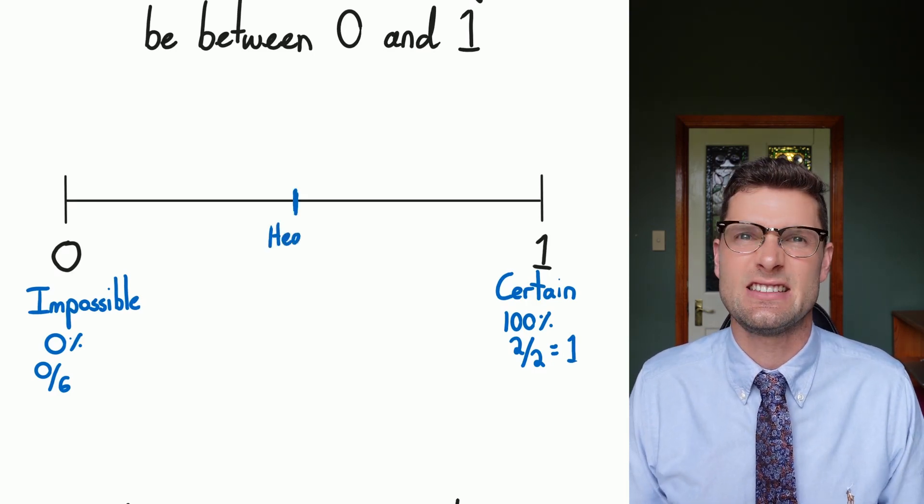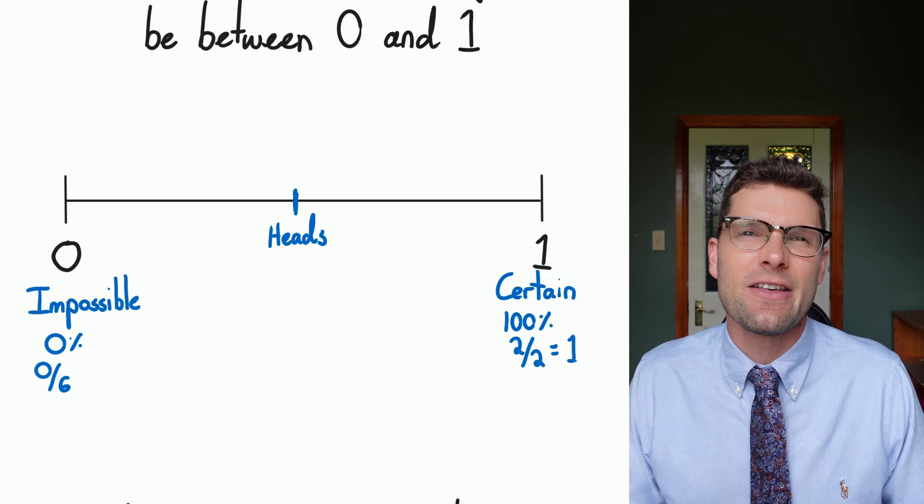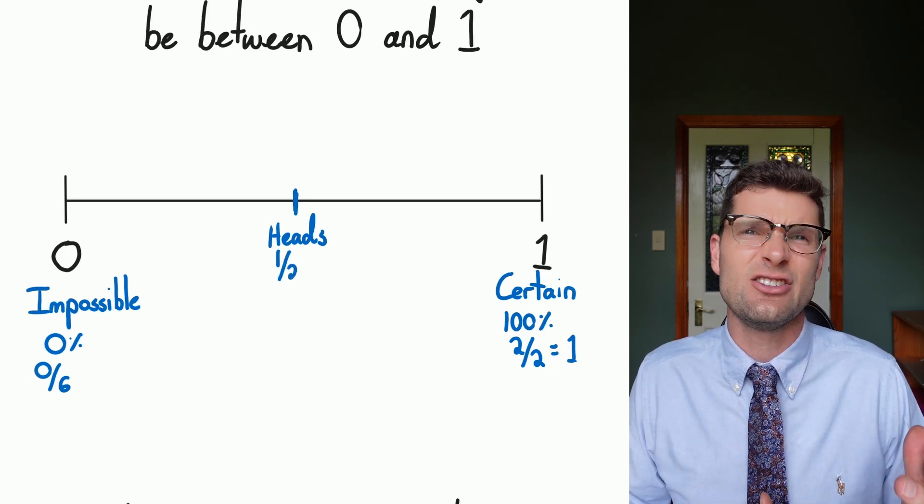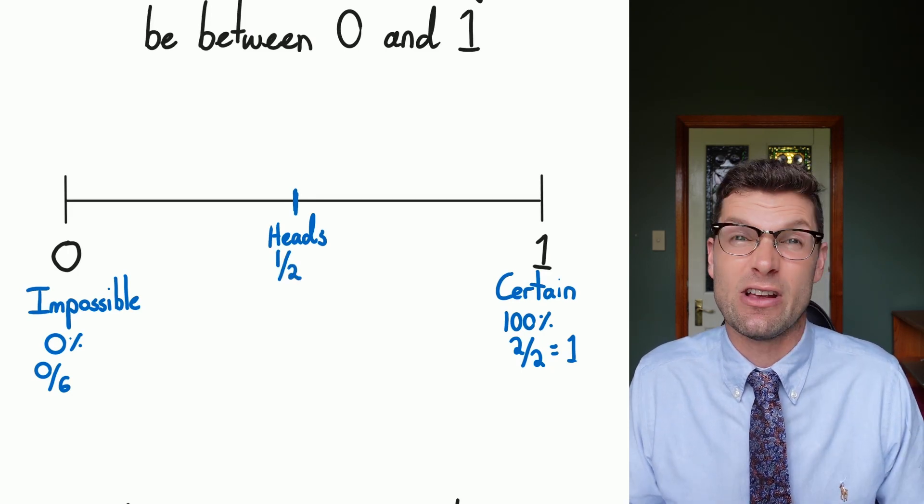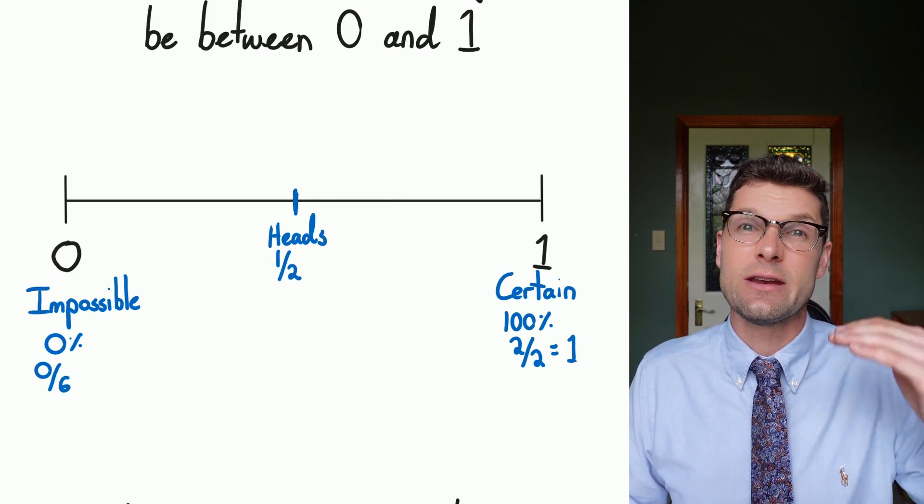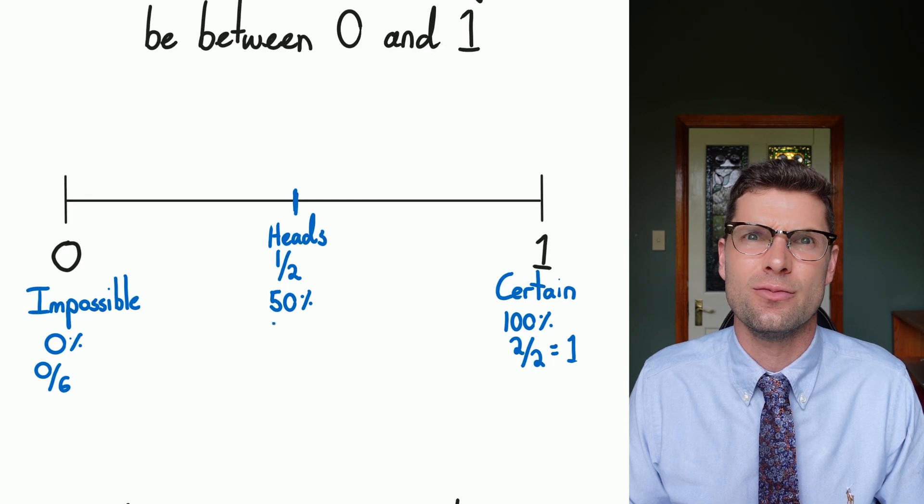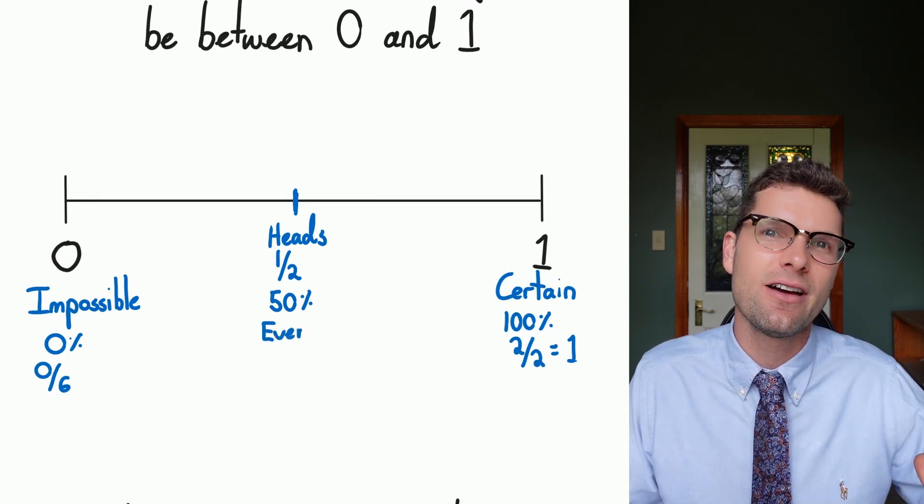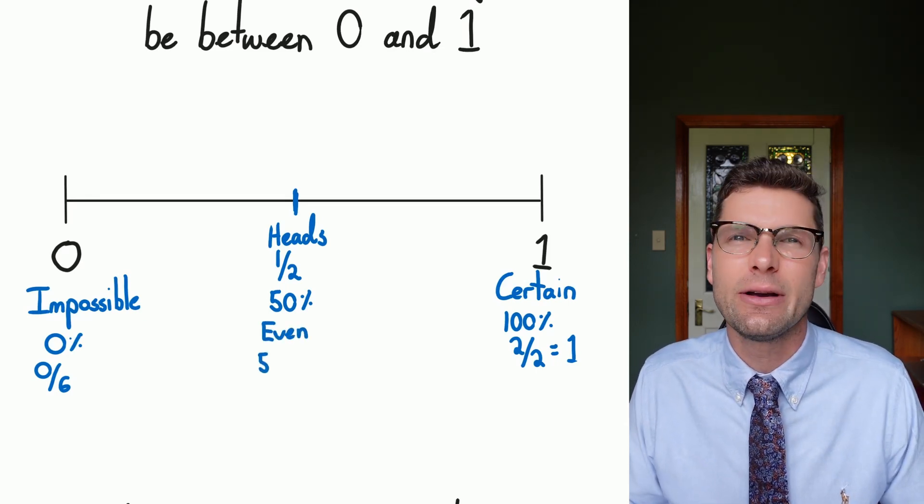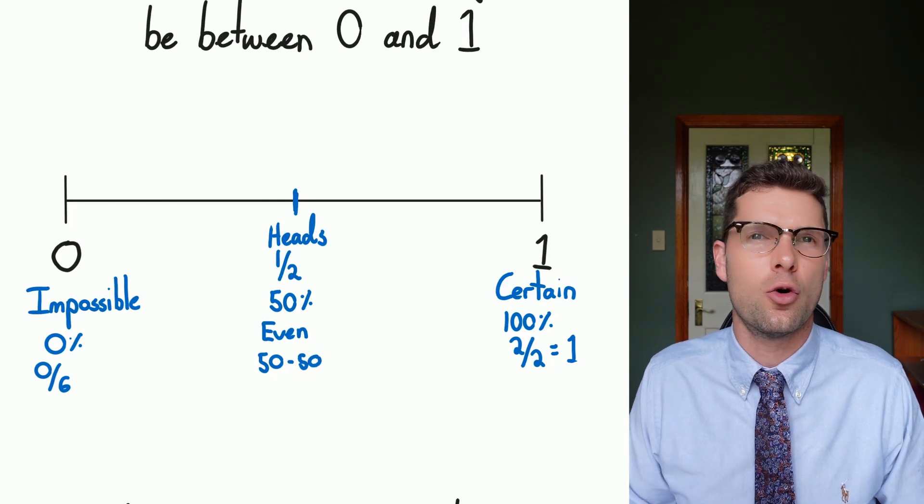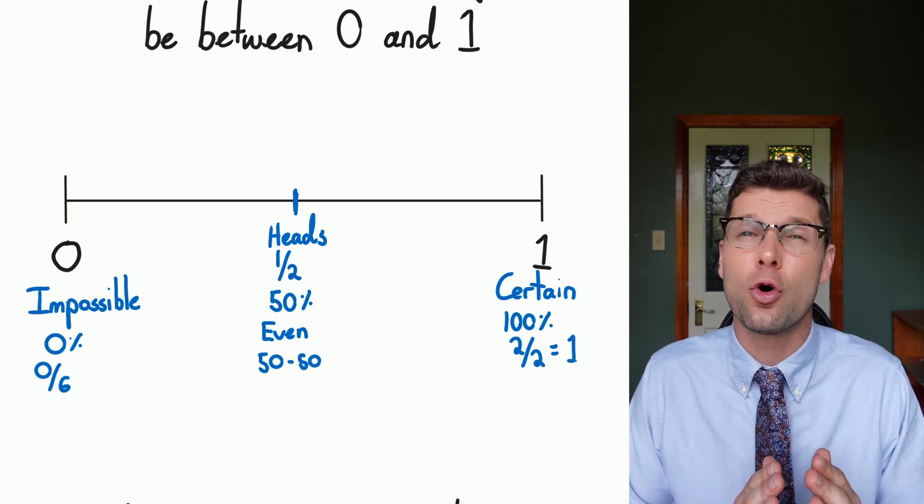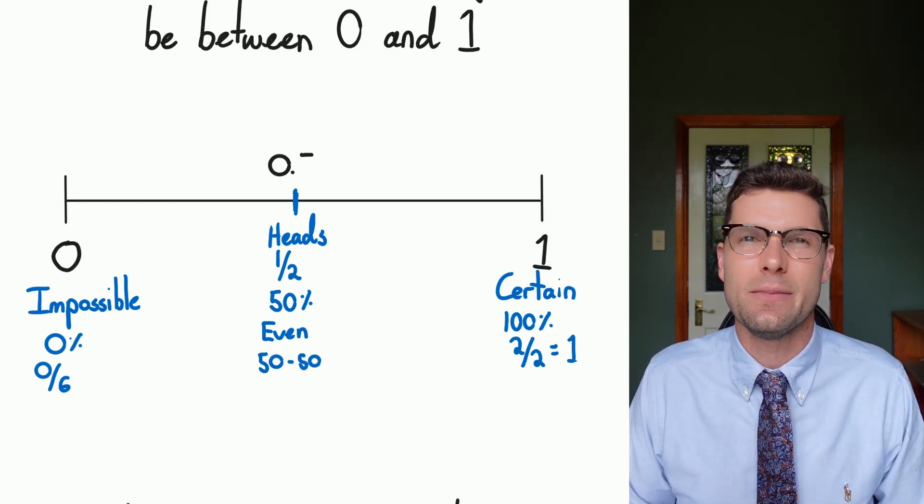Right in the middle here, you've got 50% or 0.5. So this would be like if you flip a coin and you get heads or tails. And that's a really classic example. So because we need heads, one outcome divided by two outcomes, we just have one over two, this is equal to 0.5, or 50%. You'll hear words like even odds or 50-50 chance. And these all represent right in the middle of this number line.